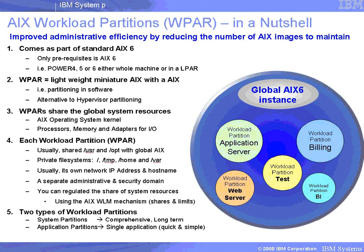A WPAR will share global resources with the copy of AIX, so there's only a single AIX kernel, and it will be taking some processing power from the processors, memory, and adapters of the global copy of AIX. Each workload partition usually shares the /usr and /opt file systems read-only with the global copy of AIX, and then has private copies of the file systems: root, /tmp, /home, and /var. It also usually has its own network IP address and host name, and looks just like a regular copy of AIX. It also has separate administrative and security domains, so each workload partition has its own root user. We can regulate the use of resources with the global instance using the same mechanisms as AIX workload manager has had for many years.